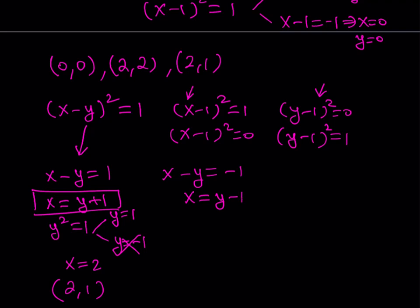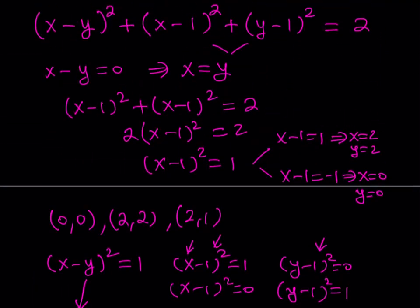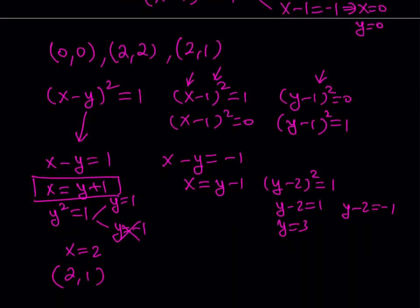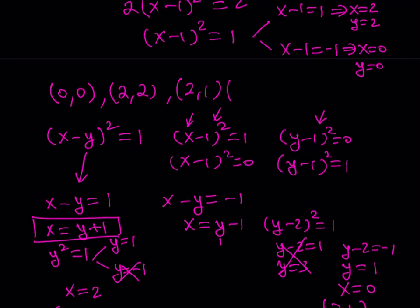For the other sub-case, x minus y equals negative 1 means x equals y minus 1. Plugging in gives y minus 2 squared equals 1, so y minus 2 equals 1 or negative 1, giving y equals 3 or y equals 1. y equals 3 is not acceptable since it gives a square of 4. So y equals 1, which means x equals 0. This gives the solution 0 comma 1.